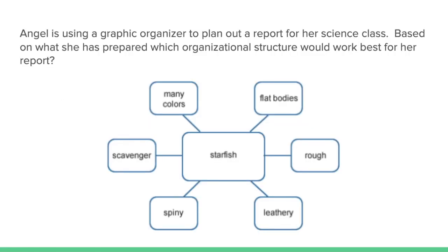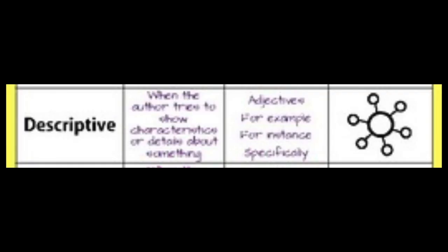Up first, we have a starfish in the middle, and reading around it says: flat bodies, rough, leathery, spiny, scavenger, and many colors. Angel is using a graphic organizer to plan out a report for her science class. Based on what she's prepared, which organizational structure would work best for her report? We see starfish in the middle with lots of information all around it. If you said descriptive, that is the best one — we're talking all about it, giving lots of examples, and trying to clearly describe the starfish.